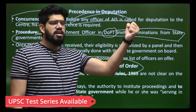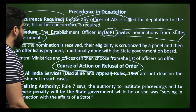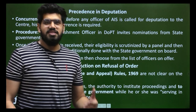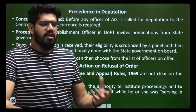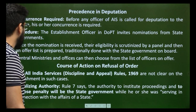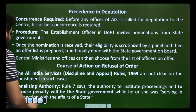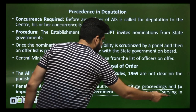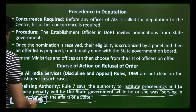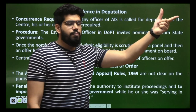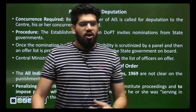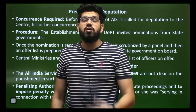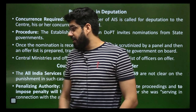The central government holds maximum power and if someone denies its order, a penalising activity follows. However, this is ambiguous — Rule 7 states that the authority to institute proceedings and impose a penalty will be the state government while the officer was serving in connection with the affairs of the state. This creates a contradiction: on one side power is given to the centre, while on the other, disciplinary action is to be taken by the state since the individual was working for the state.